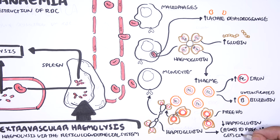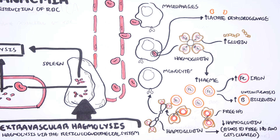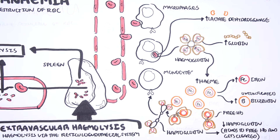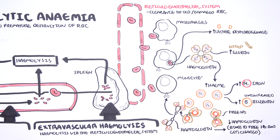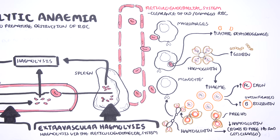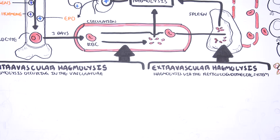In summary, haptoglobin binds free hemoglobin and gets cleared up. The classic laboratory findings in hemolytic anemia are increased lactate dehydrogenase, increased bilirubin, and decreased haptoglobin, with an increase in the reticulocyte count — because hemolysis stimulates erythropoiesis and therefore reticulocyte production.